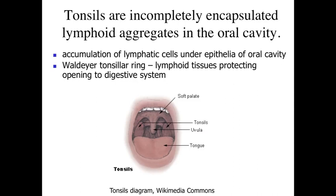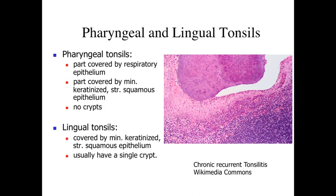We'll talk about the lymph node and the spleen in the next lecture in this series. The tonsils are incompletely encapsulated lymphoid aggregates — lymph nodules found at the back of the oral cavity, often described as Waldeyer's tonsillar ring. Because the oral cavity is the opening to the external world, it's the first thing exposed to potentially disease-causing materials being brought into the digestive system. The presence of tonsils here means that as food is brought in, the immune system can get a jumpstart on its response firsthand.